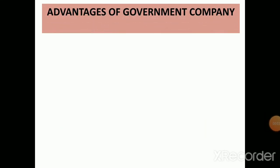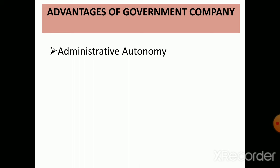Now for the advantages of government companies. The first advantage is administrative autonomy — the government company is free from government and political interference. It can function freely and smoothly, and suitable changes can be introduced whenever needed, but within the provisions of the Companies Act.